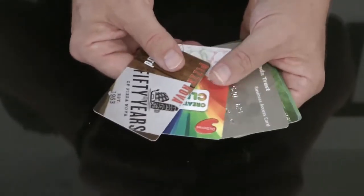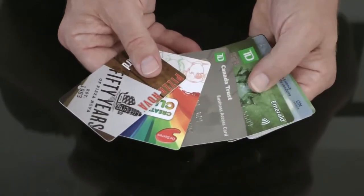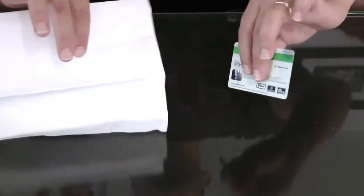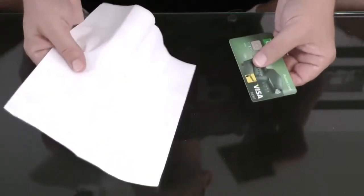The performer borrows a credit card, driver's license, or almost any other plastic card. The card is wrapped in an examined paper napkin, and a spectator is even invited to hold tightly to a corner of the wrapped card.